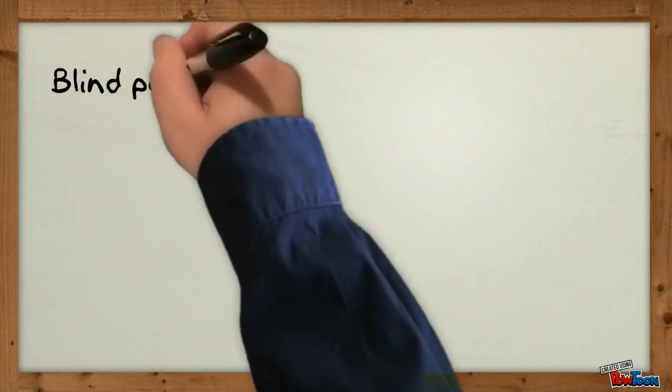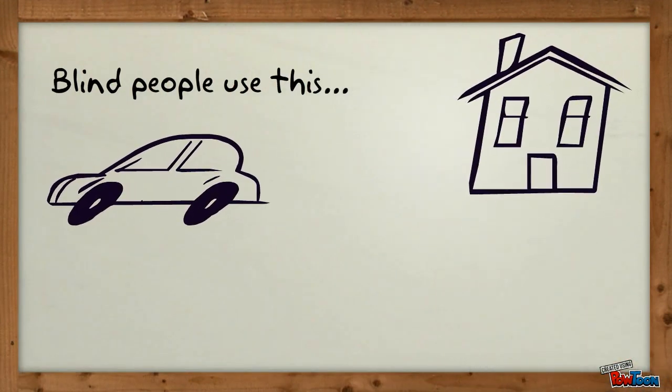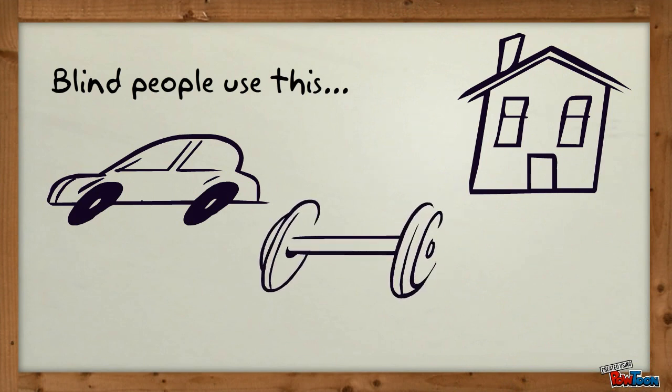Many blind people use this principle to navigate around parked cars, find doorways, and even tell the difference between hard things and soft things. Pretty cool, right?